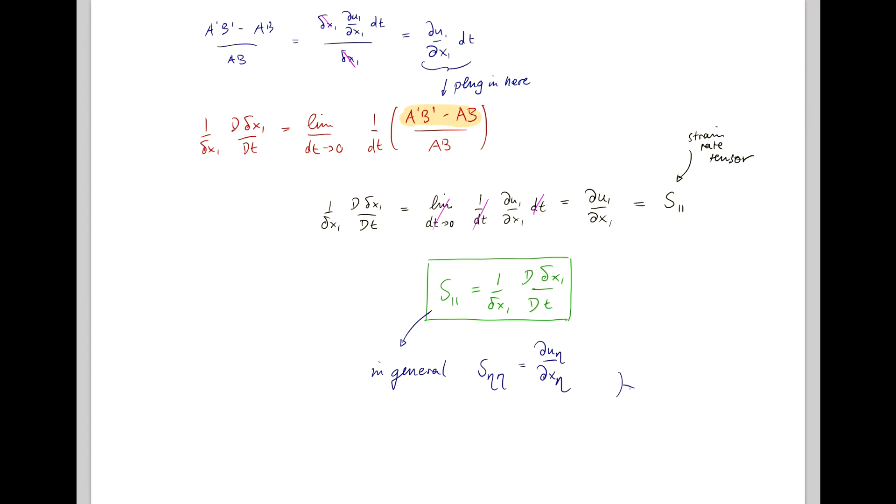And here I note that we use Greek letters to signify that we don't have summation over repeated indices.